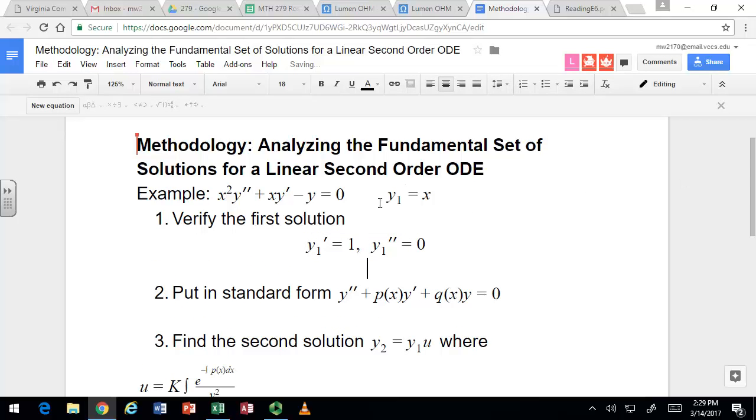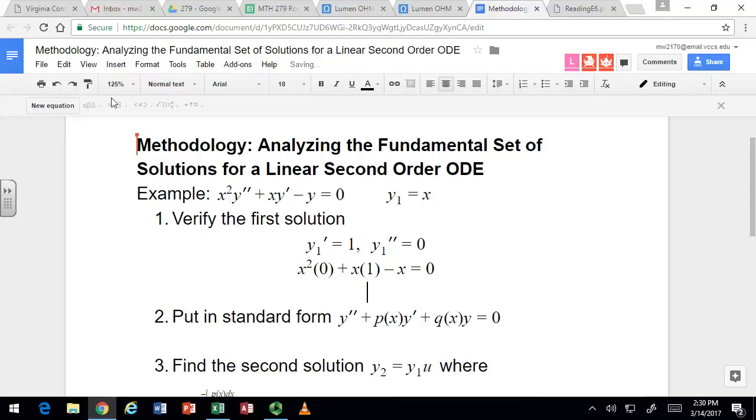Take those derivatives and substitute them into the differential equation and check that it's an identity. So second derivative is 0, first derivative is 1, and the function itself is x. You get 0 + x - x = 0, which checks out. This shows that y₁ = x is a solution to the differential equation.